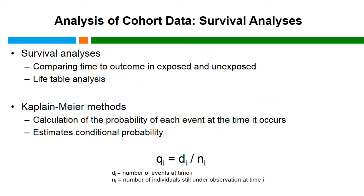Cohort studies also enable survival analyses to be conducted, comparing the time to outcome between the exposed and unexposed groups. These analyses are frequently conducted using life tables and Kaplan-Meier methods. Under the Kaplan-Meier approach, the probability of each event at the time it occurs is calculated, and the conditional probability Q sub i is calculated as the number of events at time i divided by the number of study participants still under observation at time i.